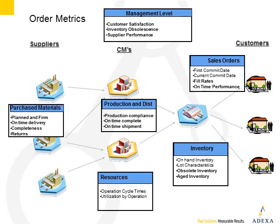On the purchase material side, we're looking at individual orders rather than a period total — looking for a commitment from a vendor on individual planned and firm purchase orders. We want the date and quantity on those orders and whether they're being delivered on time, delivered complete, and whether we have to do any returns. In the same way that we measure sales orders and whether we're treating our customers well, we want to see whether suppliers are doing well meeting individual deliveries. At the management level, key reports include customer satisfaction reports, inventory obsolescence reports, and supplier performance.